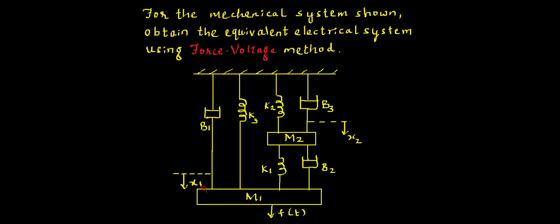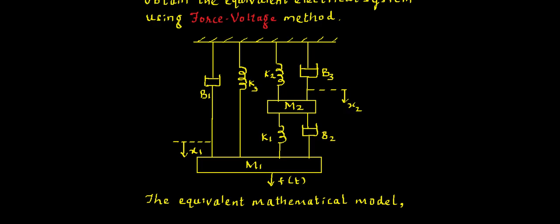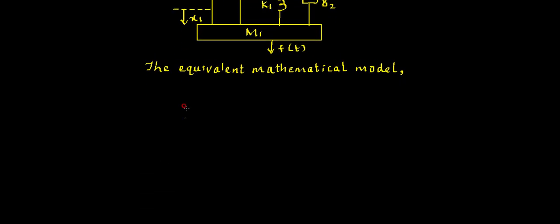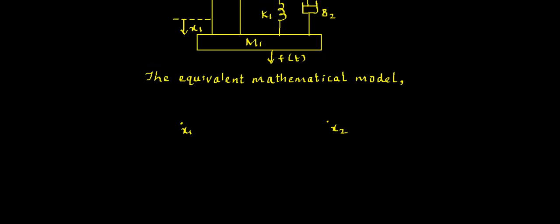That produces a displacement x1, and there is another displacement called x2. First I need to identify the number of displacements; for those displacements I will draw that many nodes. The very first task is to draw the equivalent mathematical model. Since there are two displacements, I will draw two nodes — I am going to call them node x1 and node x2.